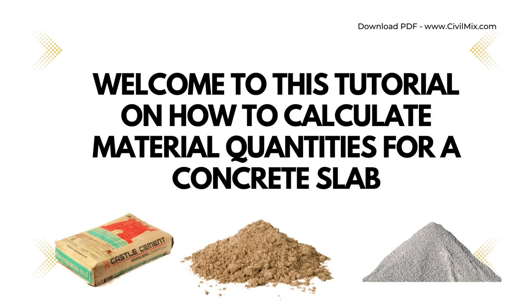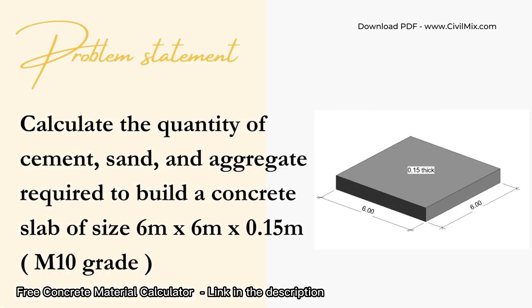Welcome to this tutorial on how to calculate material quantities for a concrete slab of size 6 meter by 6 meter and thickness of 0.15 meter, M10 grade. We will be calculating the quantity of cement, sand, and aggregate required to build this concrete slab.